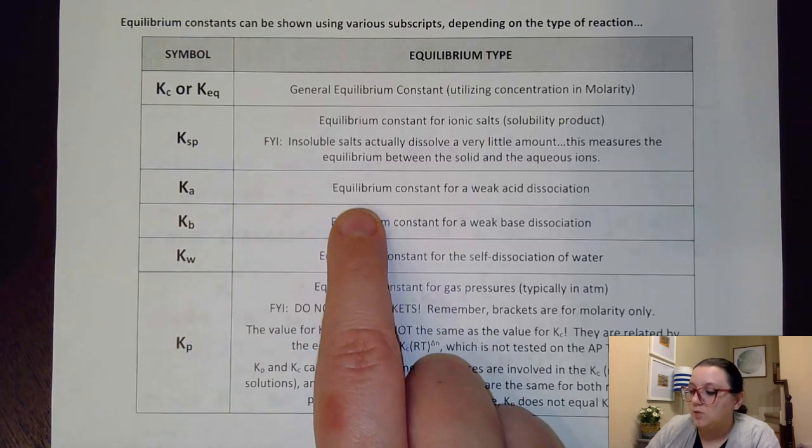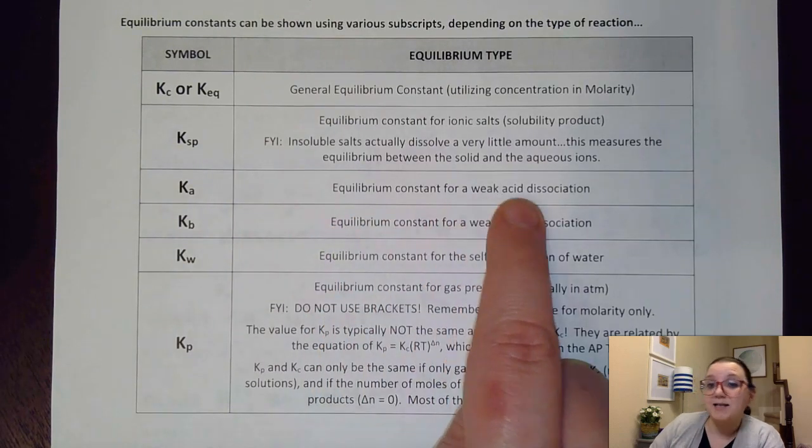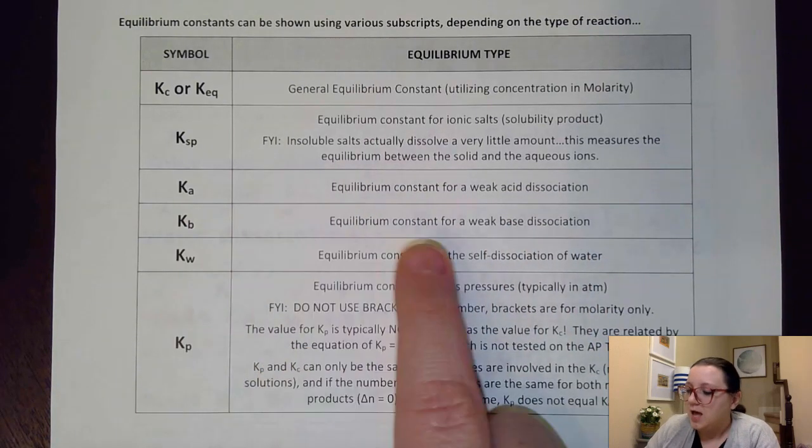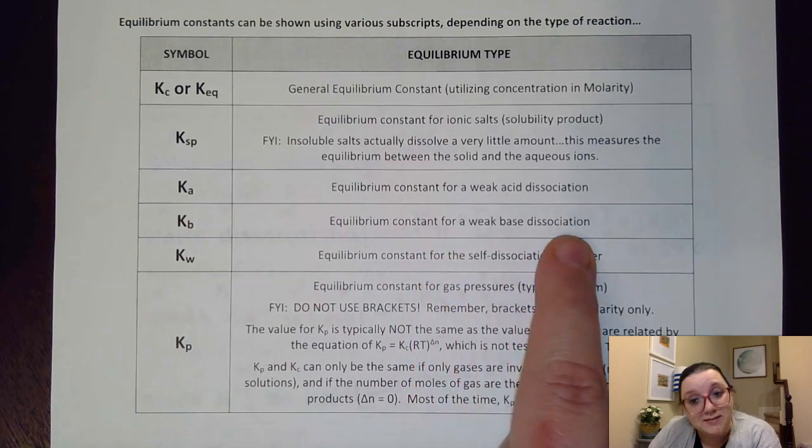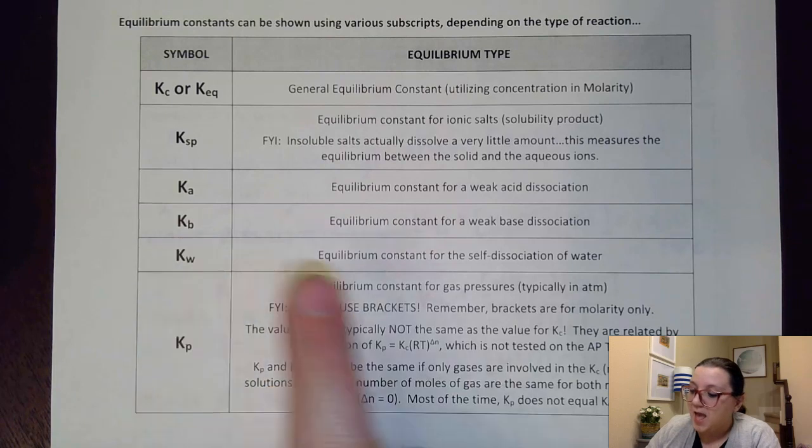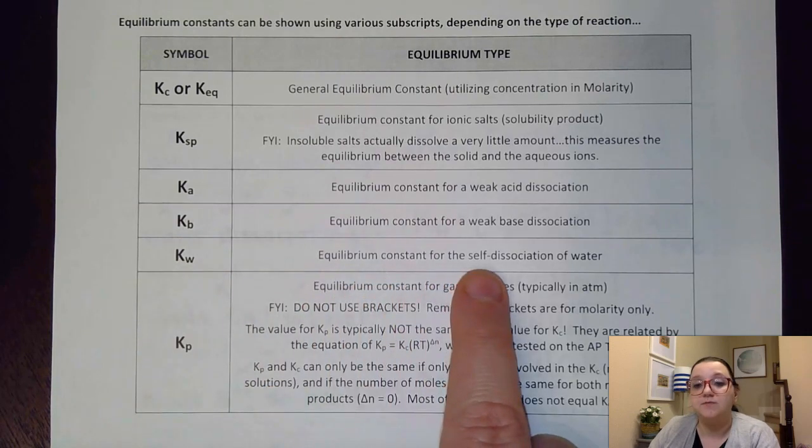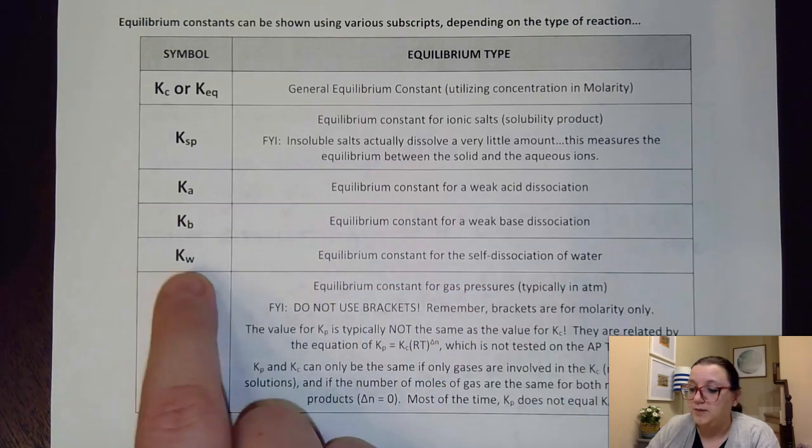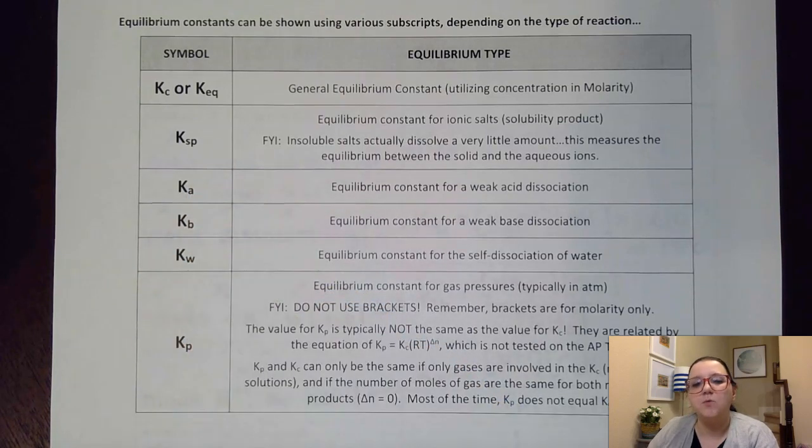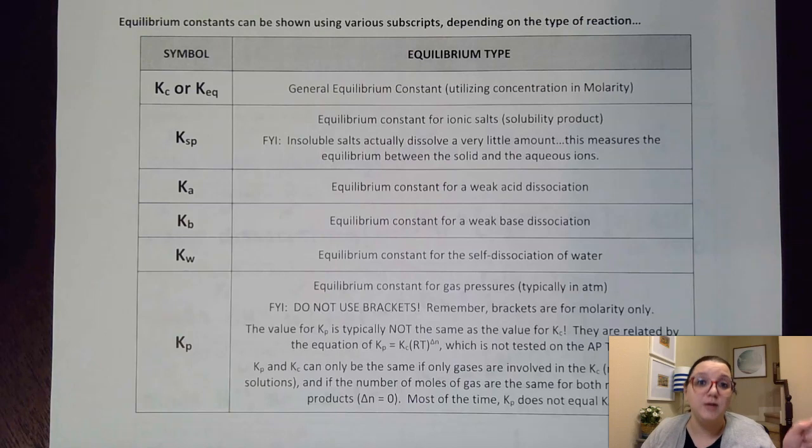And we actually do this for insoluble salts. Insoluble salts reach an equilibrium with their dissolving. Typically your soluble salts are so forced over to the product side that we don't typically calculate a KSP for those. We just say they proceed to completion, but insoluble salts technically dissolve a little bit. And so they actually do make equilibrium. Now, equilibrium constants for a weak acid dissociation is called a KA. A being for acid. If we have a weak base dissociation, that would be a KB we'd be calculating. And the equilibrium constant for the self dissociation of water would be called KW. These three are something that we're going to briefly look at in this unit, but we're actually going to spend a lot more time on those in our next unit, unit eight, when we talk about acids and bases.